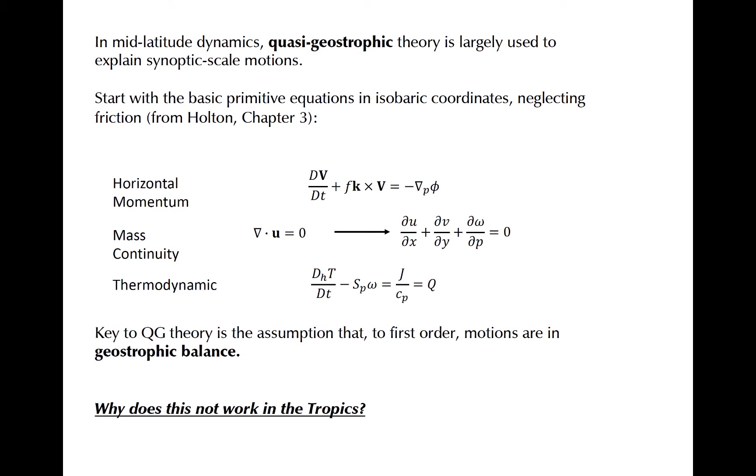Synoptic scale motions can be approximated in the mid-latitudes using quasi-geostrophic theory. In the beginning, there were three equations of motion. The momentum equation, shown here in two-dimensional form, the mass continuity equation, and the thermodynamic equation, in which Q represents a heating rate in units of Kelvin or degree C per unit time.